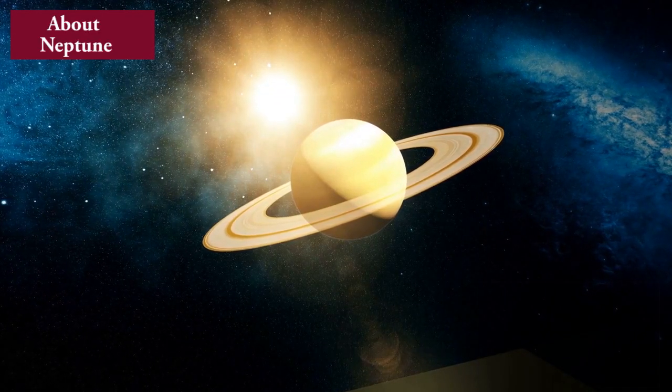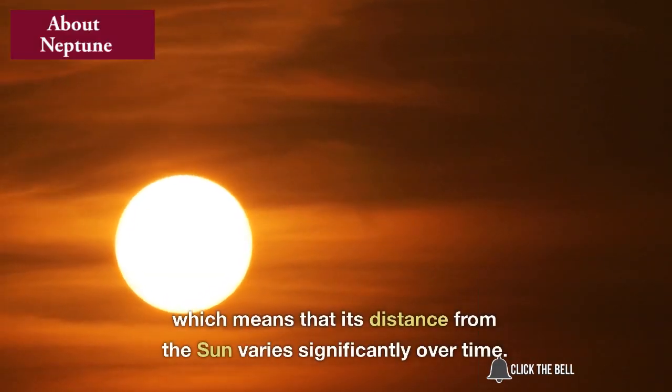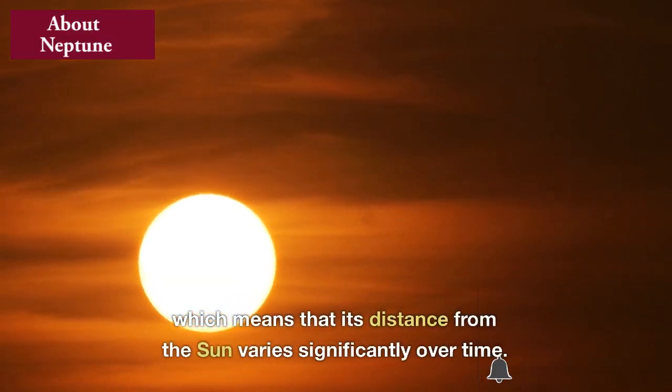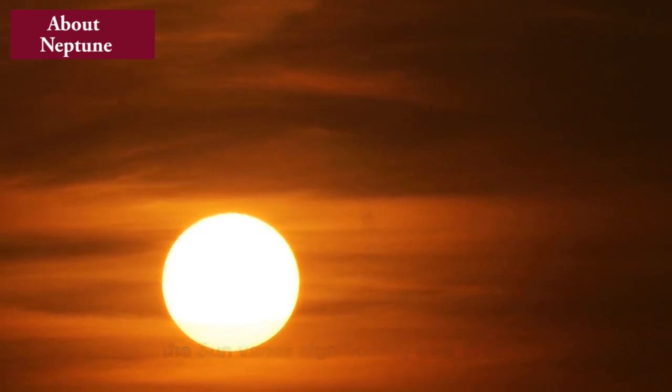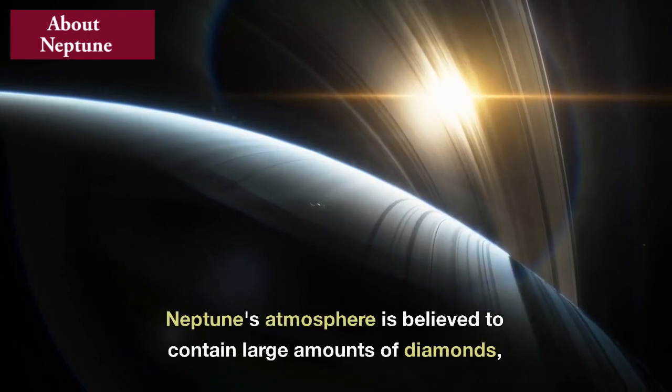Neptune has a highly elliptical orbit, which means that its distance from the Sun varies significantly over time.